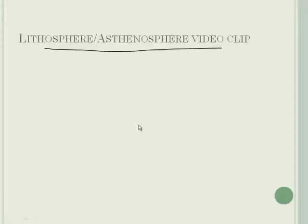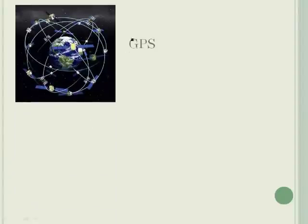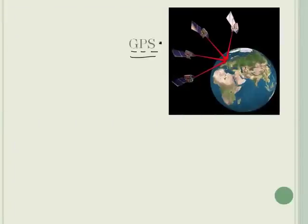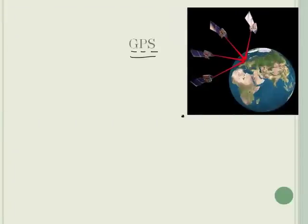That was a cool video clip. Now let's talk about GPS. You're probably familiar with GPS — there are about 24 satellites around the Earth, called global positioning satellites. They go around the world, and you only need about three of them that can see you to determine where you are.